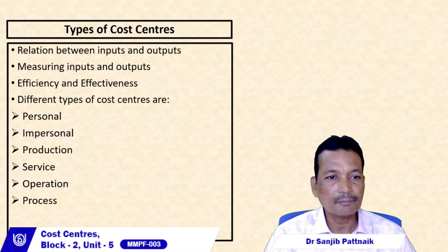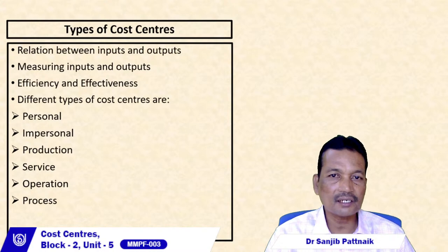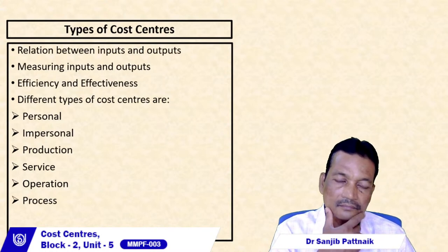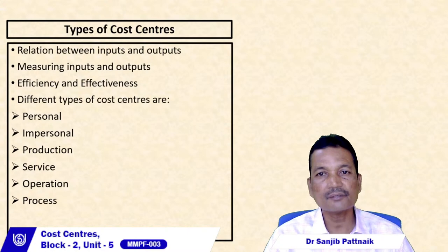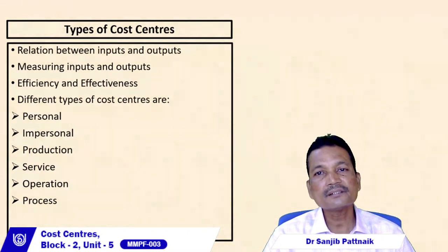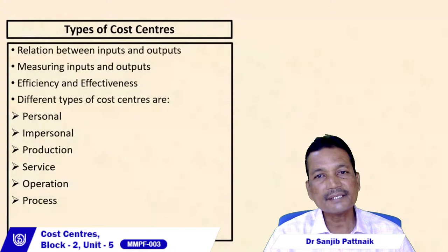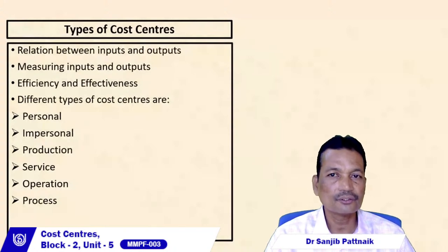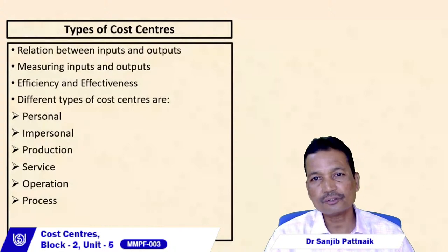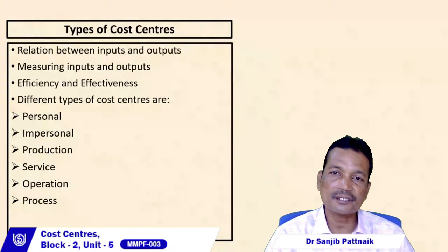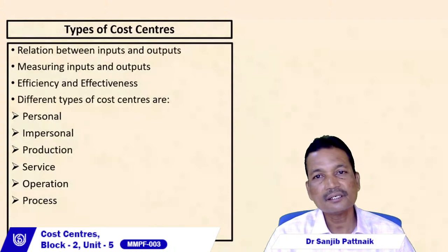The first type of cost center is the personal cost center — any segment where persons or human beings generate cost through their activities. Examples include the finance department and the office and administration department, both of which are personal cost centers.